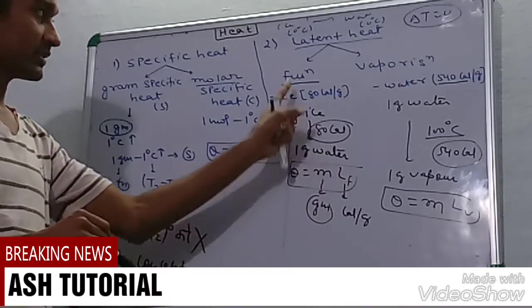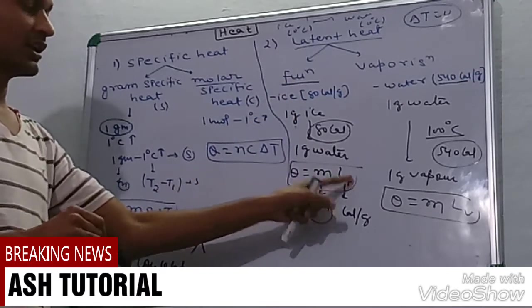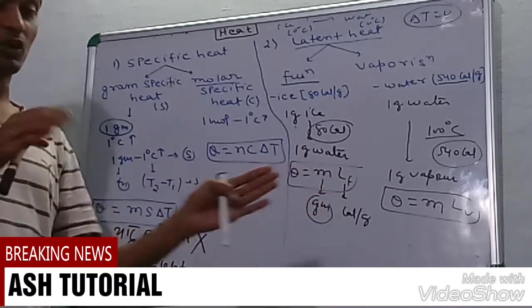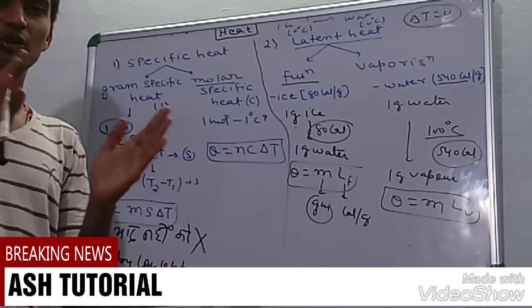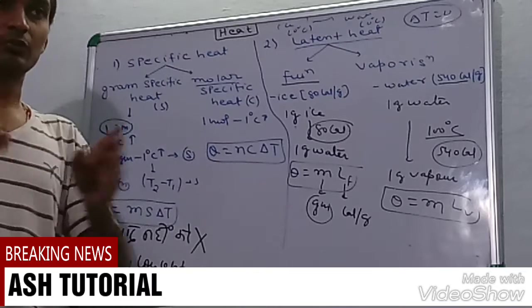This is the general formula. When I use water I will use ice and fusion with 80, and for other substances the data of LF will be provided in question. No need to mug up the value of LF for other substances.